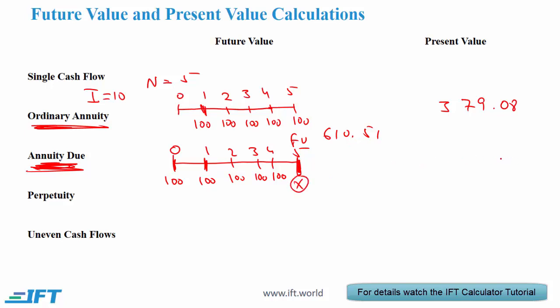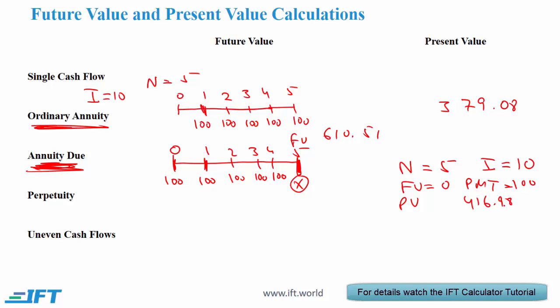For the present value calculation you again make sure the calculator is in begin mode, then set N equal to 5, interest rate equal to 10, future value to 0, payment to 100, and compute the present value. In this case the answer is 416.98. Notice that with an annuity due the present value is higher than with an ordinary annuity, and this is because the payments are being received earlier.